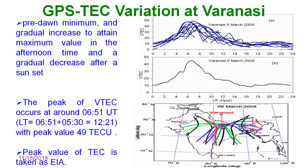At Varanasi — a low-latitude station located near the equatorial ionization anomaly (EIA) crest — we measured GPS TEC variation. The total electron content from different satellite signals is averaged to find daily variation. Over 24 hours, the maximum is found around noon (12 IST, 6 UT), because photo-ionization from solar radiation is maximum at that time. At night and in the morning, TEC decreases as ionization reduces.